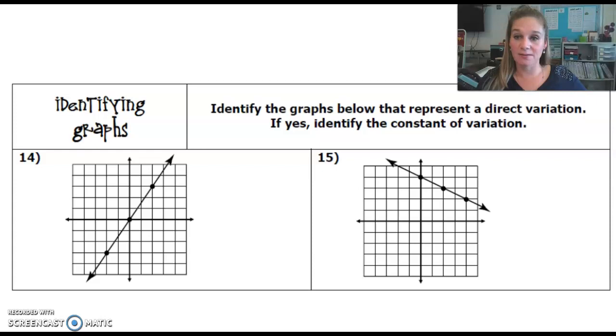You can see here in this section it gives us a new set of directions that says to identify the graphs below that represent a direct variation. If it's yes, then they want us to also find the constant of variation.